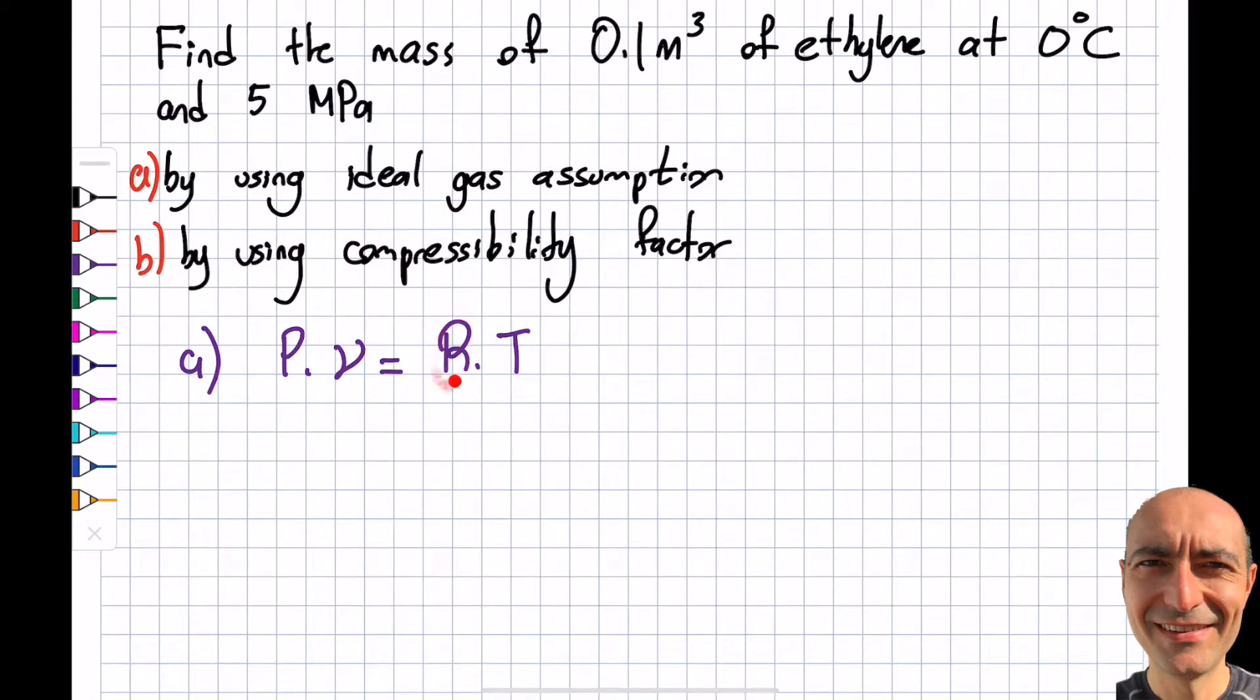The way that I write it, this R is not the universal gas constant. This depends on what I have—it's a specific value for ethylene. In order to find the R, I need to go to appendix one, A1.